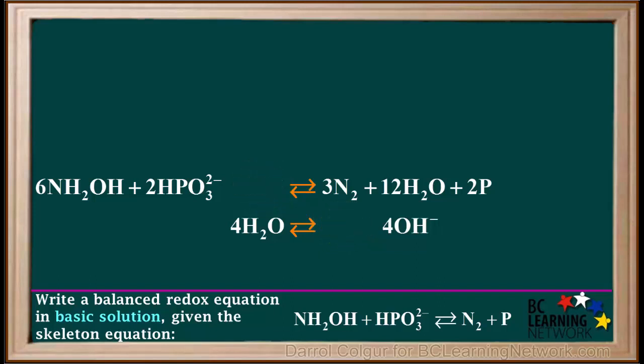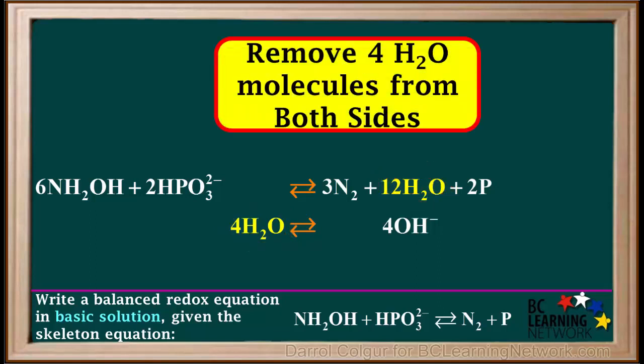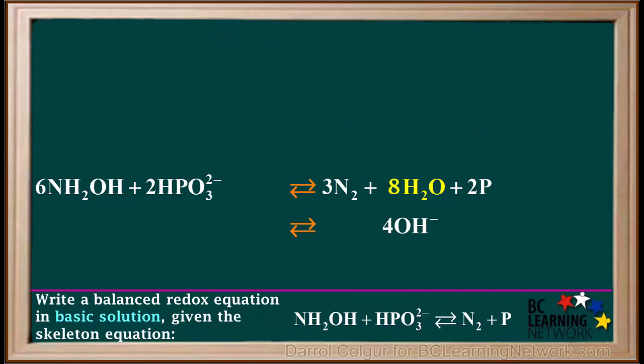Leaving us with this. Notice we have 4H2O on the left and 12H2O on the right. So we can simplify this by removing 4 water molecules from both sides of the equation. Removing 4 water molecules from the left side leaves us with none, and removing 4 water molecules from the right side leaves us with 12 minus 4 equals 8.